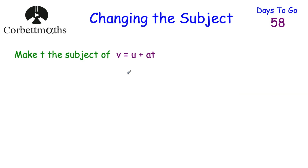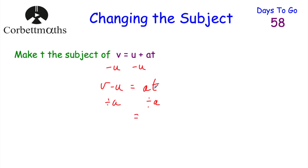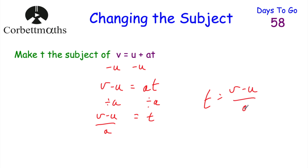Here's a question for you to try: make T the subject of V equals U plus AT. Pause the video now and give it a go. So if we want to make T the subject, we'd first get rid of the U — subtract U from both sides. On the left hand side: V subtract U. On the right hand side: U plus AT, subtract U, so we're left with AT. Now we've got A multiplied by T, and we don't want the A, so divide both sides by A. That gives us T equals V subtract U over A. Well done if you got that.